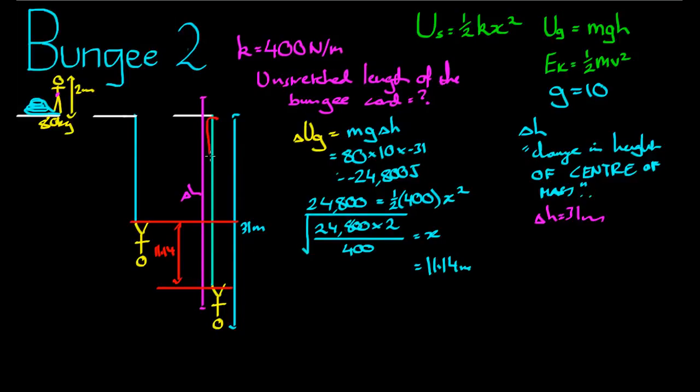How long is the bungee cord here? If the head is 31 meters below the platform there, and the person is 2 meters tall, then 31 take away 2 is equal to 29 meters. So that length there is equal to 29 meters. So now I have this length here, this length here, and the mysterious length here, which we're trying to find, the unstretched length. You see that if we take 11.14 from 29, so 29 take away 11.14, we get that length there, which is the length we want. So 29 take 11.14 comes to 17.86 meters.